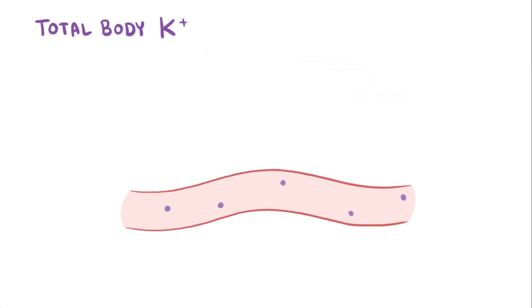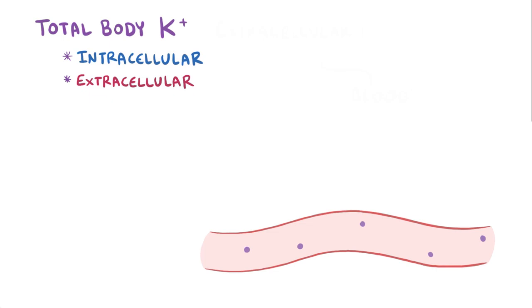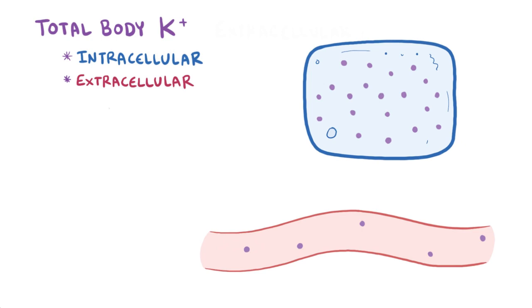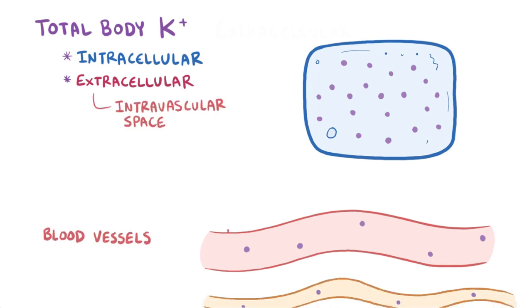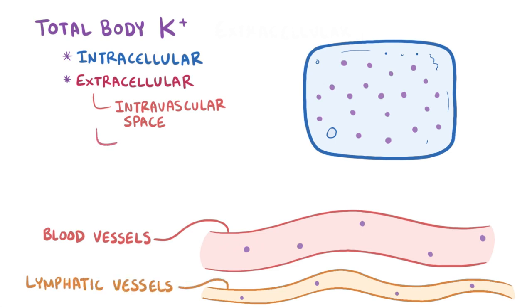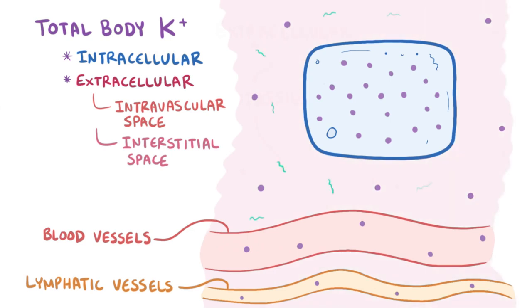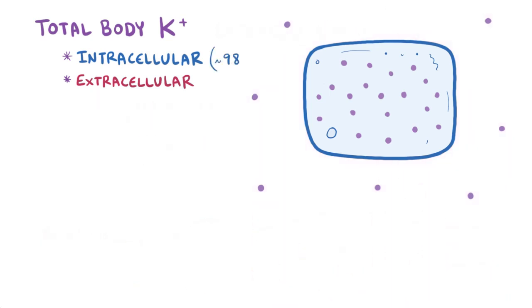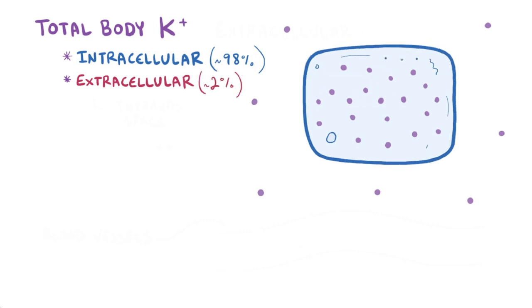Total body potassium can essentially be split into two components: intracellular and extracellular potassium, or potassium inside and outside cells, respectively. The extracellular component includes both the intravascular space, which is the space within blood and lymphatic vessels, and the interstitial space, the space between cells. The vast majority, around 98%, of all the body's potassium is intracellular, or inside the cells.